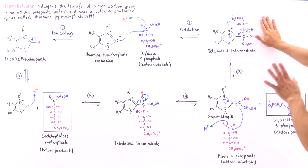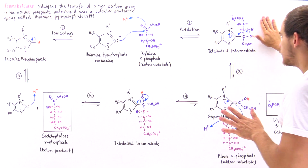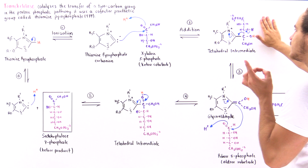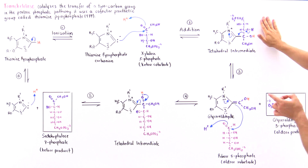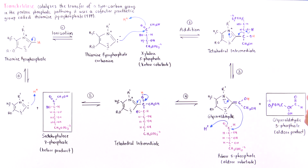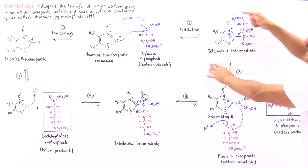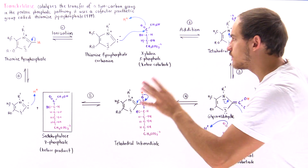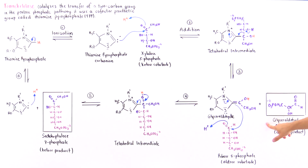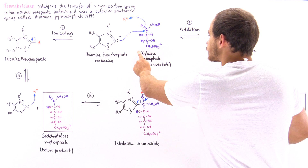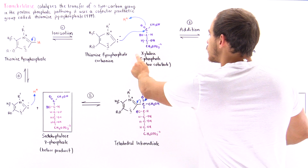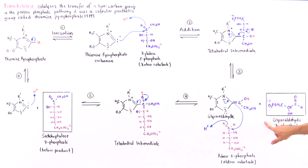This tetrahedral intermediate molecule is not very stable, so a rearrangement takes place. The molecule that is kicked off becomes the first product of this reaction. Because we used xylulose-5-phosphate, the product molecule is glyceraldehyde-3-phosphate — the aldose product formed in this reaction.